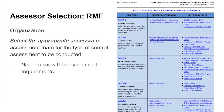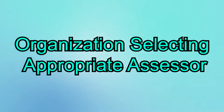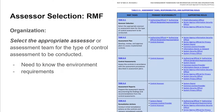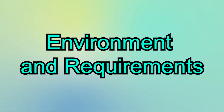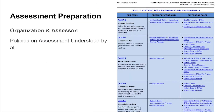One of the first steps is the organization selecting the appropriate assessor or assessment team to conduct the assessment for the security controls. They have to know their environment and they have to know their requirements. Part of understanding their requirements is ensuring that the appropriate policies are covering the security and privacy control assessments, and making sure that those are in place and understood by all who are affected in the organization.